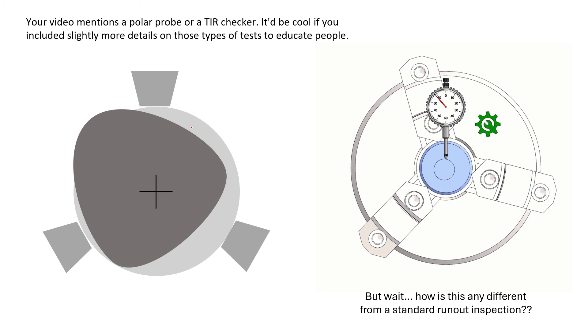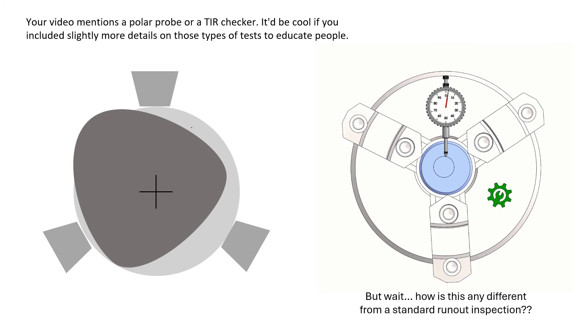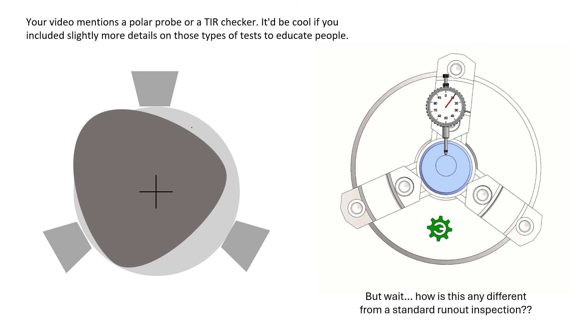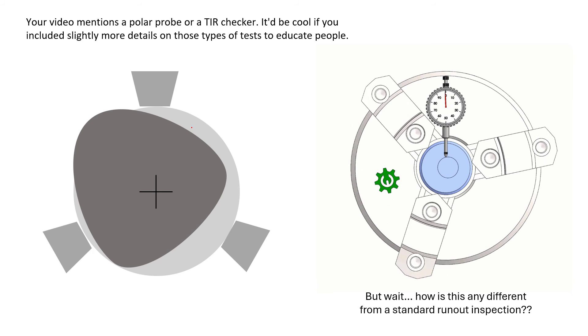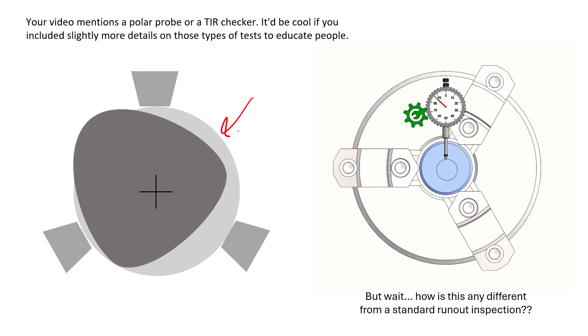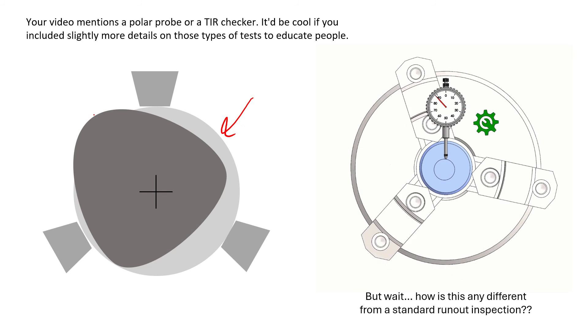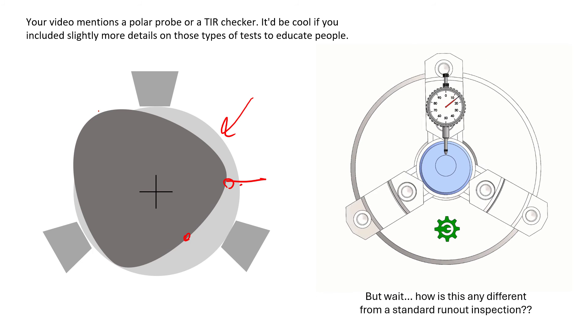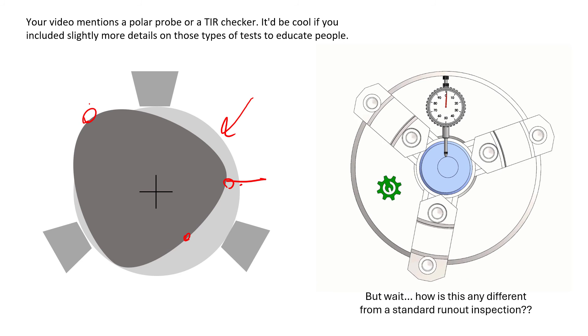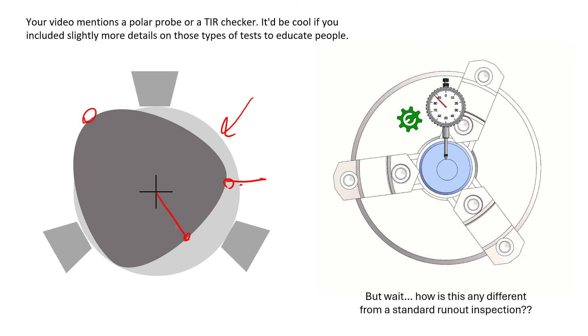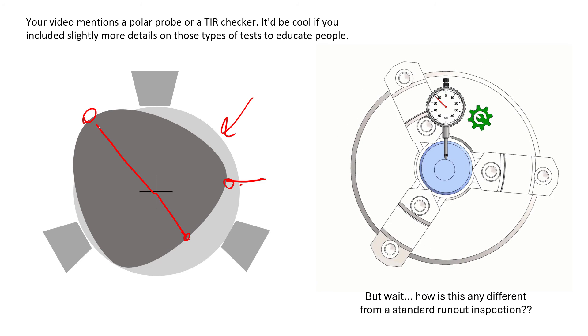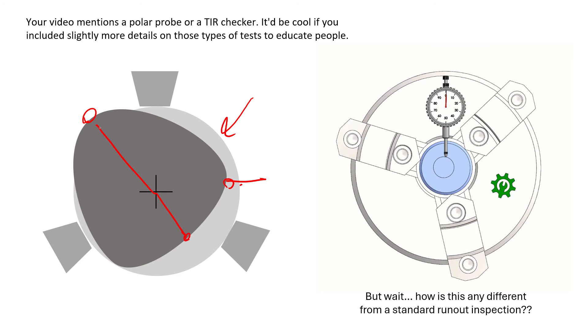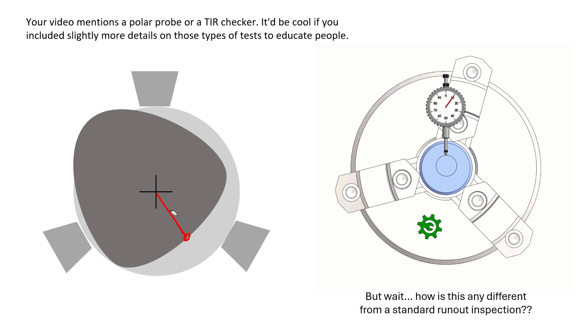And you're not far off. The problem is with the runout check, like you see here, this is taking into account locational error. So if we were to rotate this part over here, when our indicator hits this low point here versus this high point here, that's a pretty drastic change in radial deviations. When in reality, the actual amount of circularity is probably less than that.